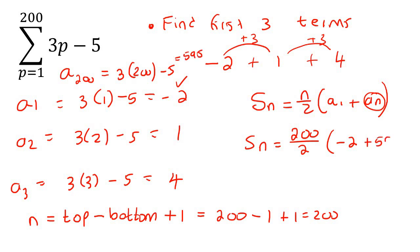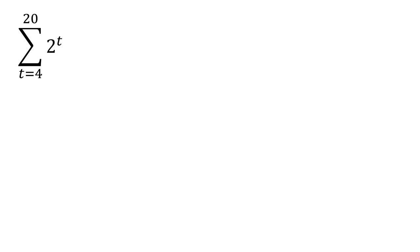And so, we can say plus 595. And now, we can just go calculate. And that's going to be 59,300. And so, if you had to go do this 200 times, and you had to then go add all of the numbers together, you would get 59,300. So, if you're bored right now, go have fun with that, and you should get to the same answer.